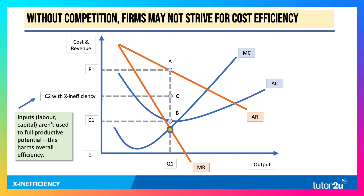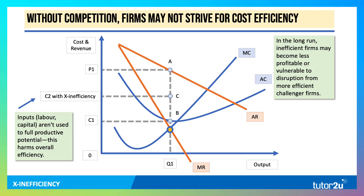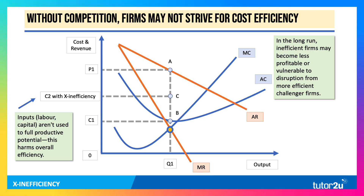The inputs — the labour and the capital — are not being used to their full productive potential, and clearly this harms overall efficiency. In the long run, that fall in profit may make a firm vulnerable to disruption from efficient challenger firms. We often do see the rise of challenger brands and challenger businesses in markets where the perception is that established firms are experiencing X-inefficiencies.